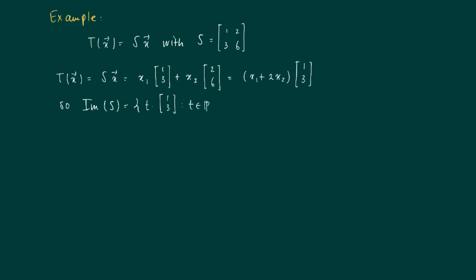And T is varied over R. So this is basically the line through the origin with direction vector [1, 3]. Or put differently, it's spanned by the vector [1, 3].